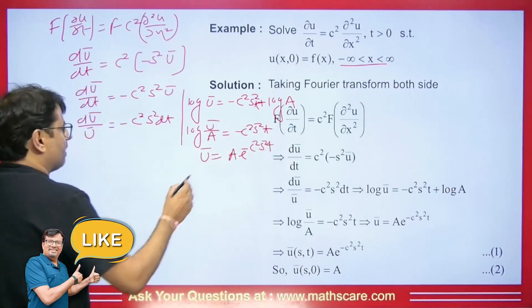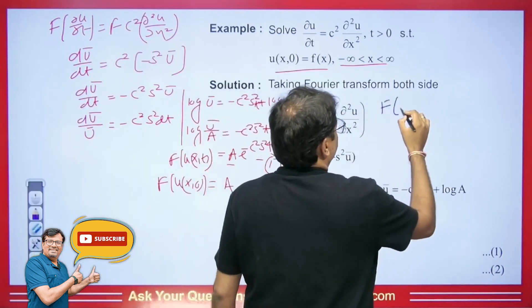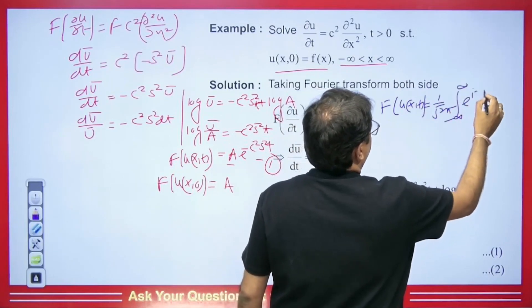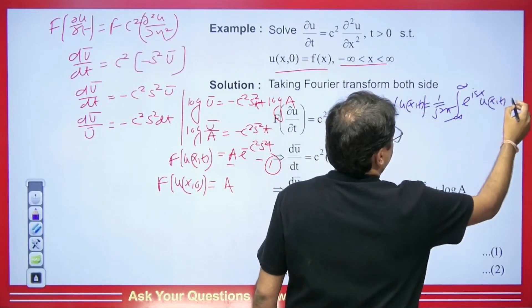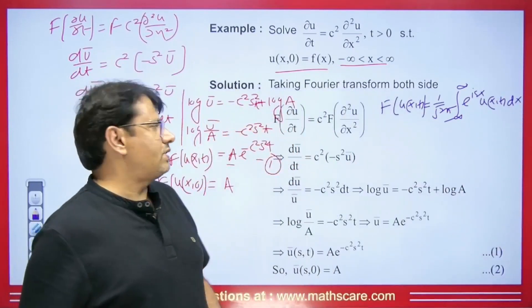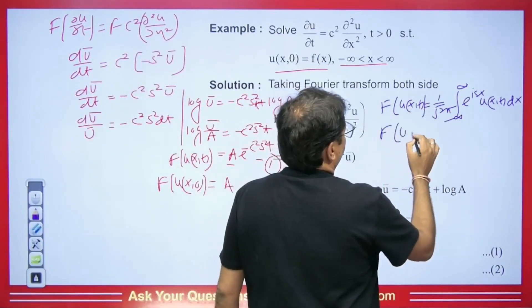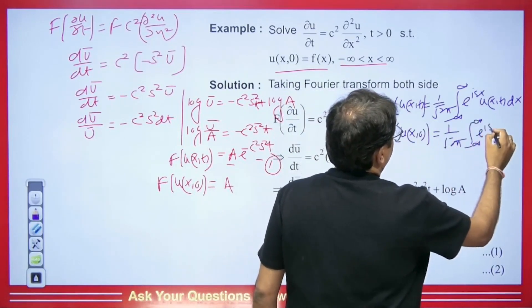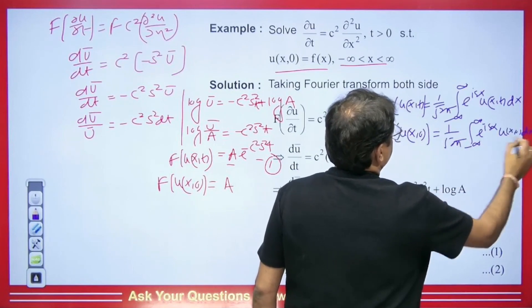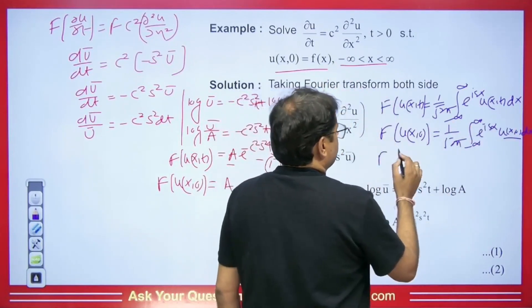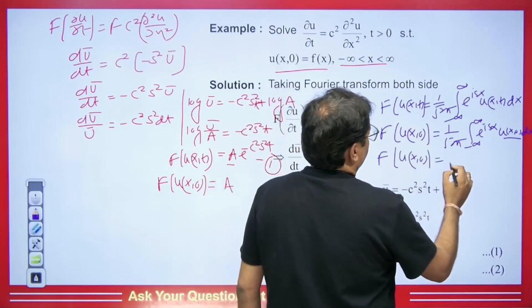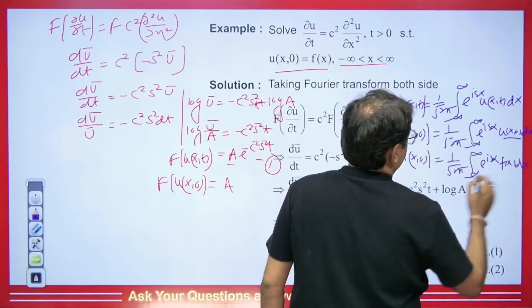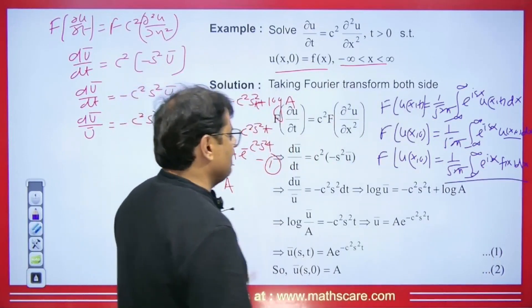When we take the Fourier transform of u(x,t), we get ū = (1/√(2π)) ∫_{−∞}^{∞} e^{isx} u(x,t) dx. Wherever t appears, we put t = 0. Then ū at t=0 becomes (1/√(2π)) ∫_{−∞}^{∞} e^{isx} u(x,0) dx. Since u(x,0) = f(x) is given, we get ū(s,0) = (1/√(2π)) ∫_{−∞}^{∞} e^{isx} f(x) dx.